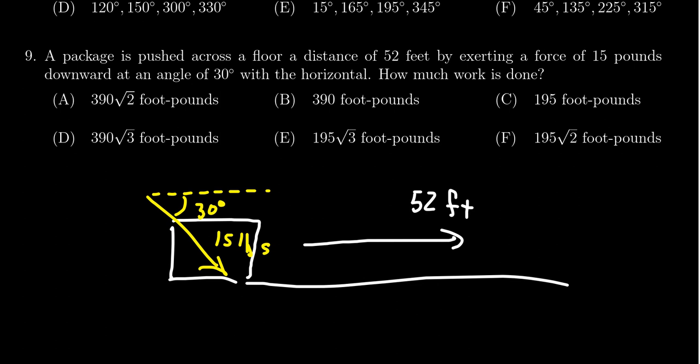So how much work is done? Well, the formula we've learned previously is that the work is equal to the magnitude of the force times cosine of the angle between them times by the distance traveled here. So we have this information. We have 15 pounds of force. It was traveling or it moved 52 feet.